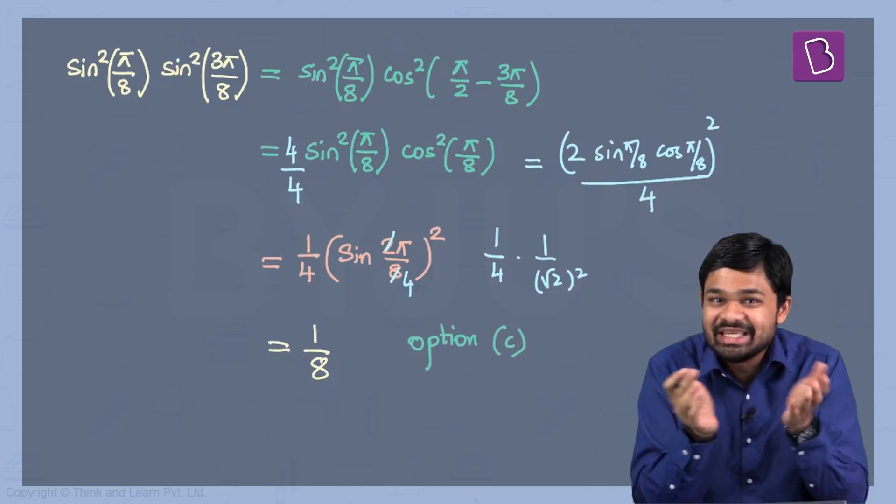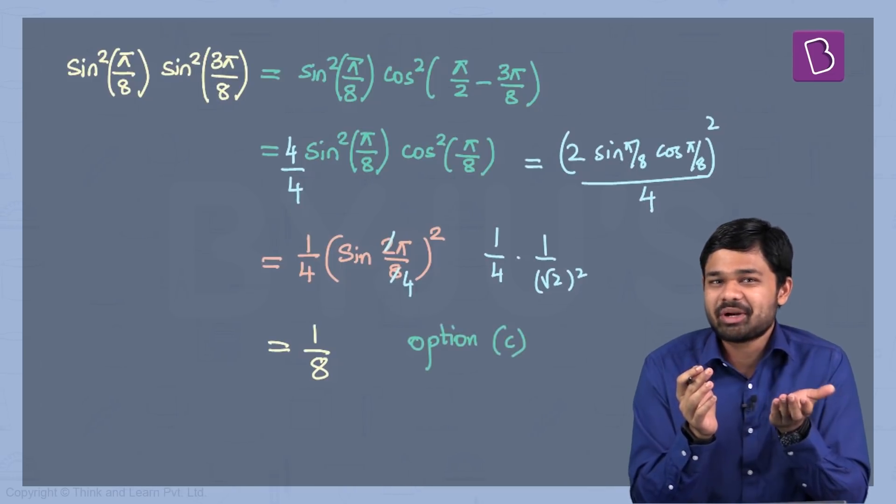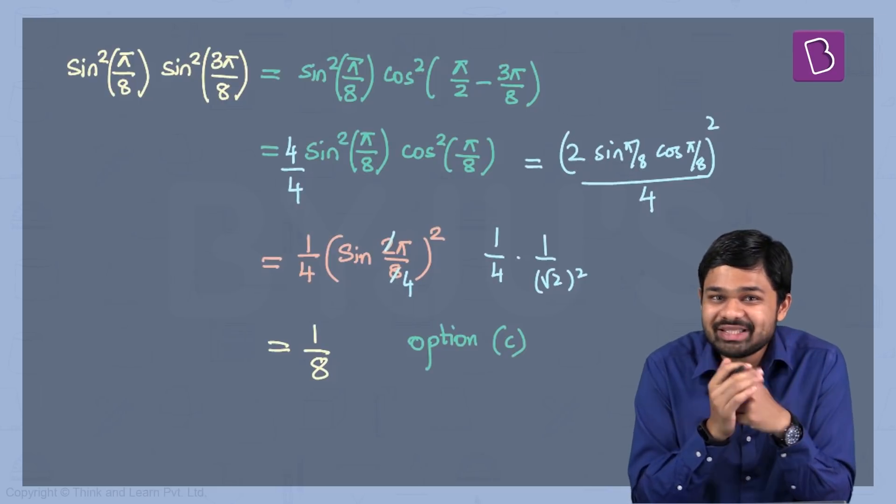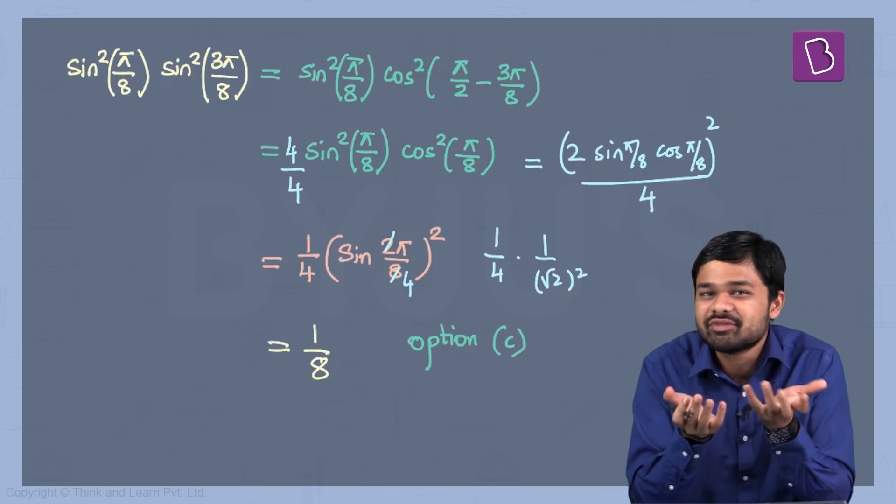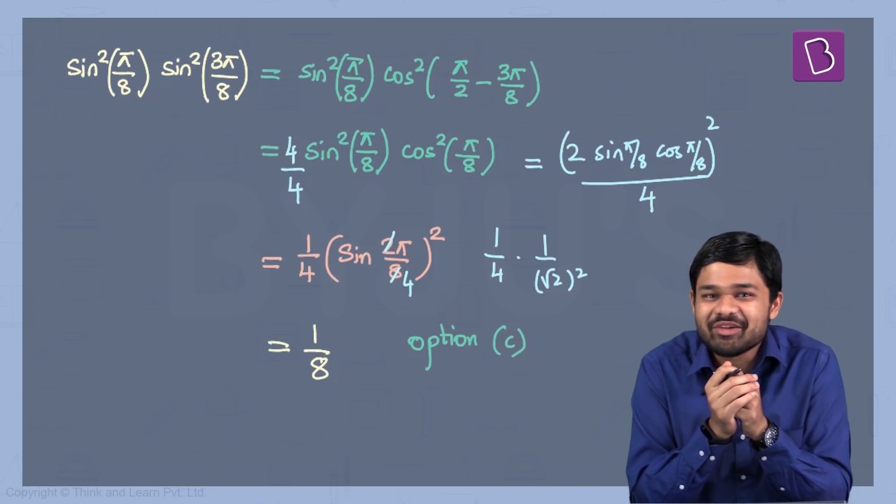So option C is the right answer to this particular problem. But was this a difficult problem? Believe me, if you knew the first trick, which was to convert some of the cosines using the cos(π - θ) formula, this problem was as good as solved.